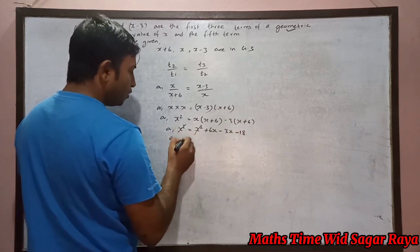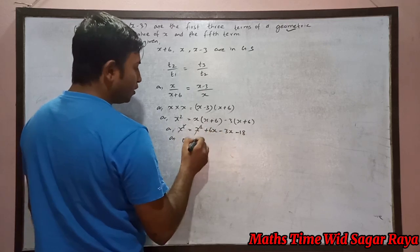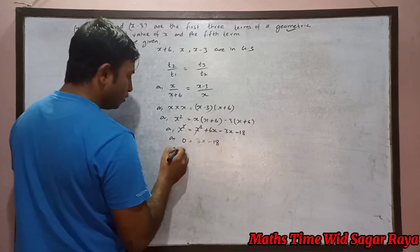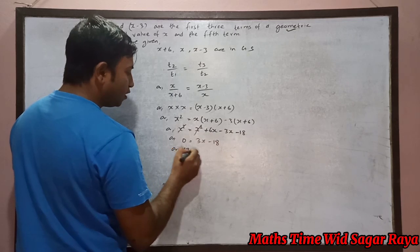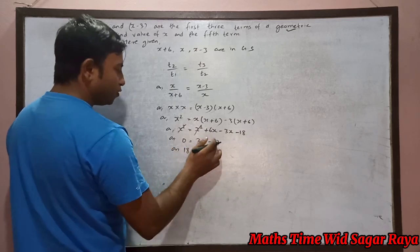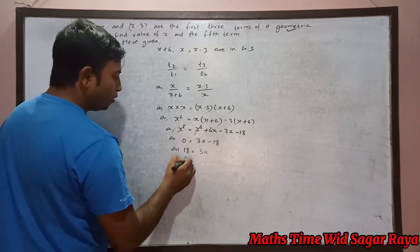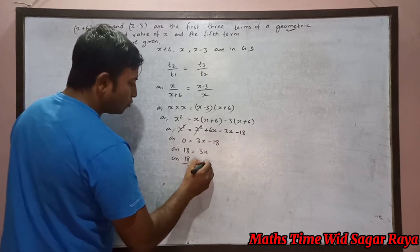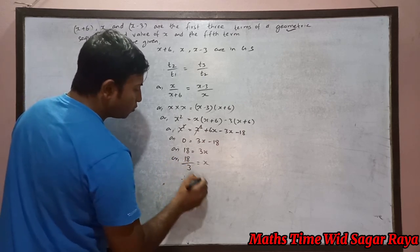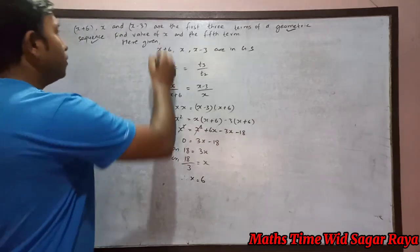x squared, we can cancel. Now 6x minus 3x equals 3x minus 18. We can bring this to this side, so minus 18 becomes positive. 18 by 3 equals x, therefore x equals 6.